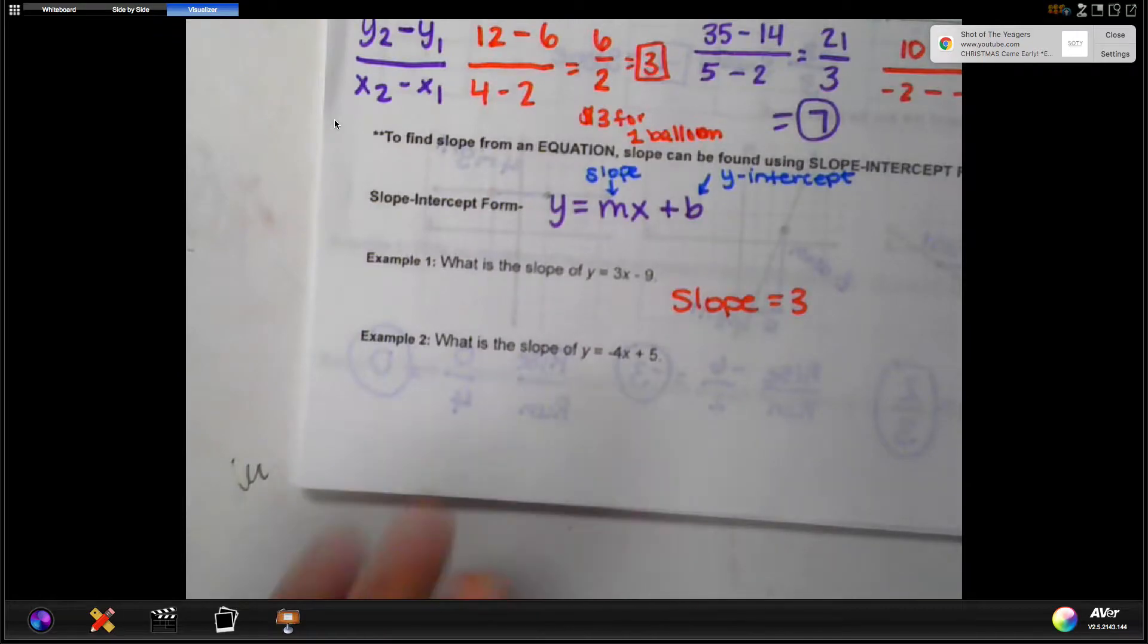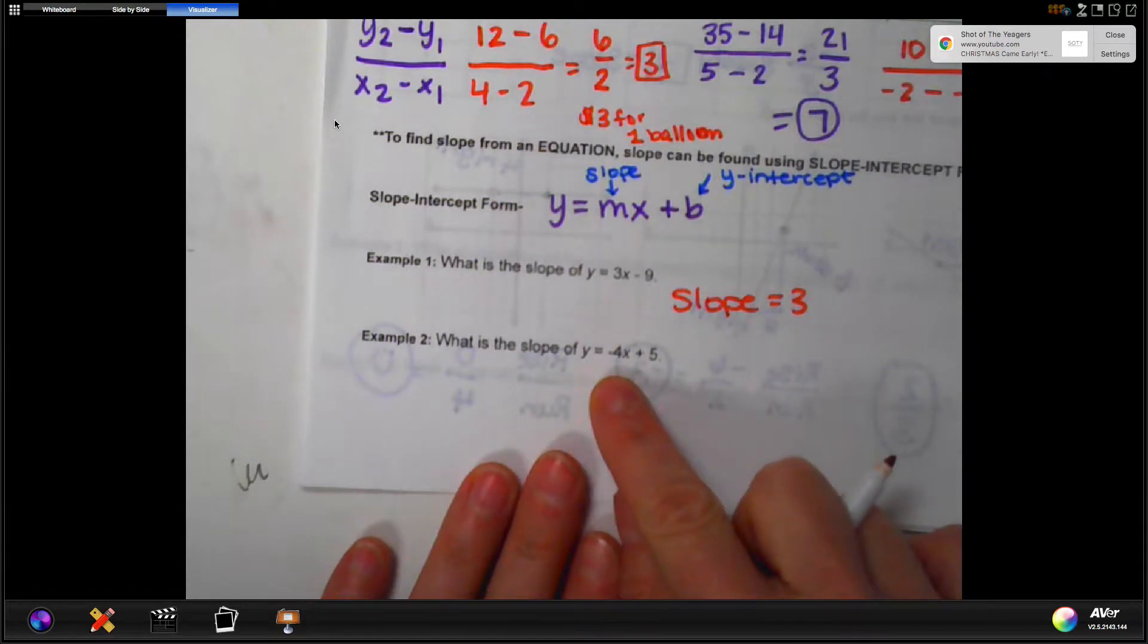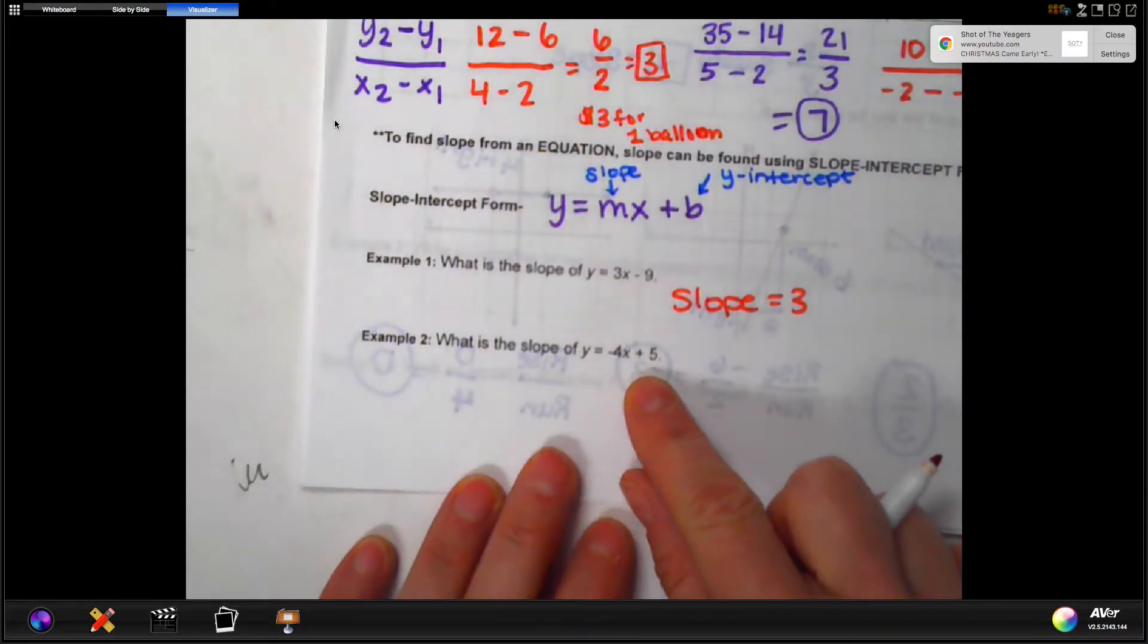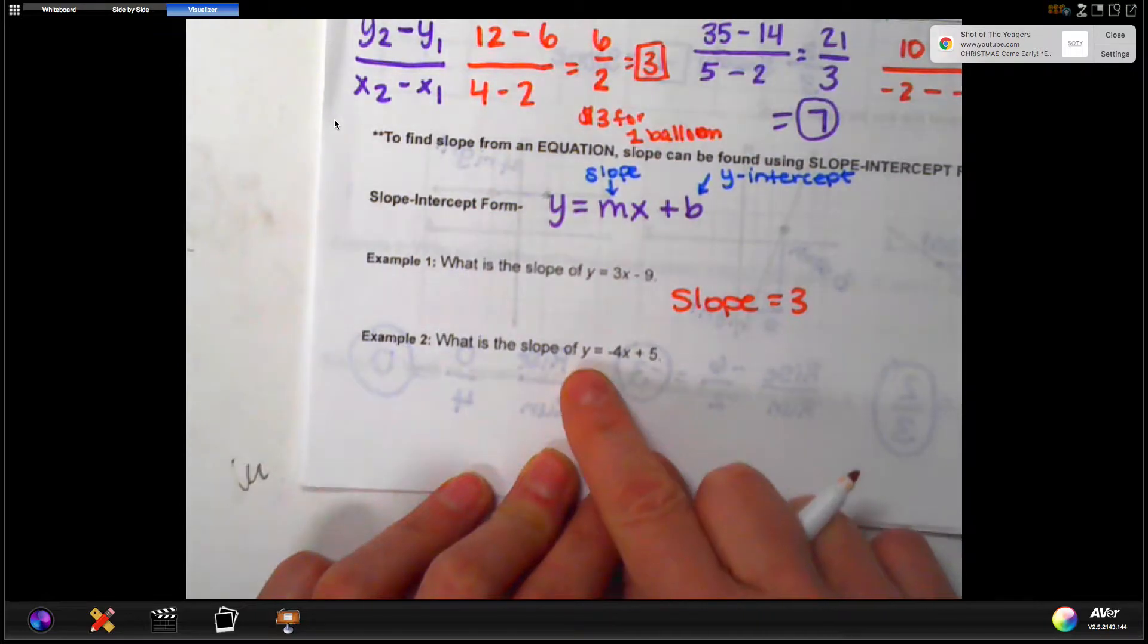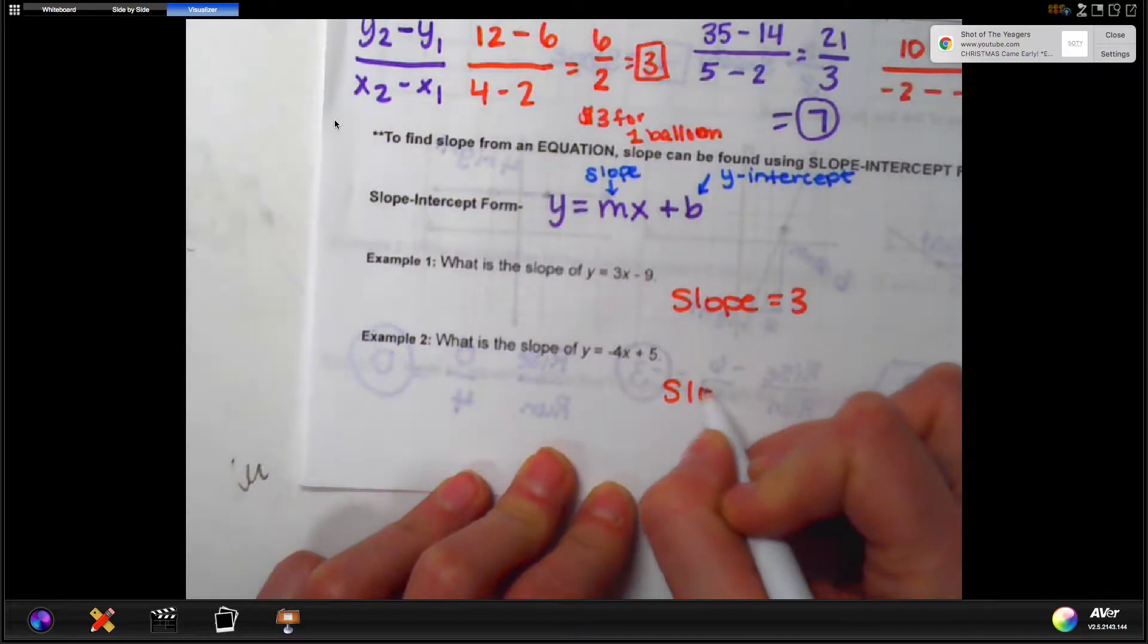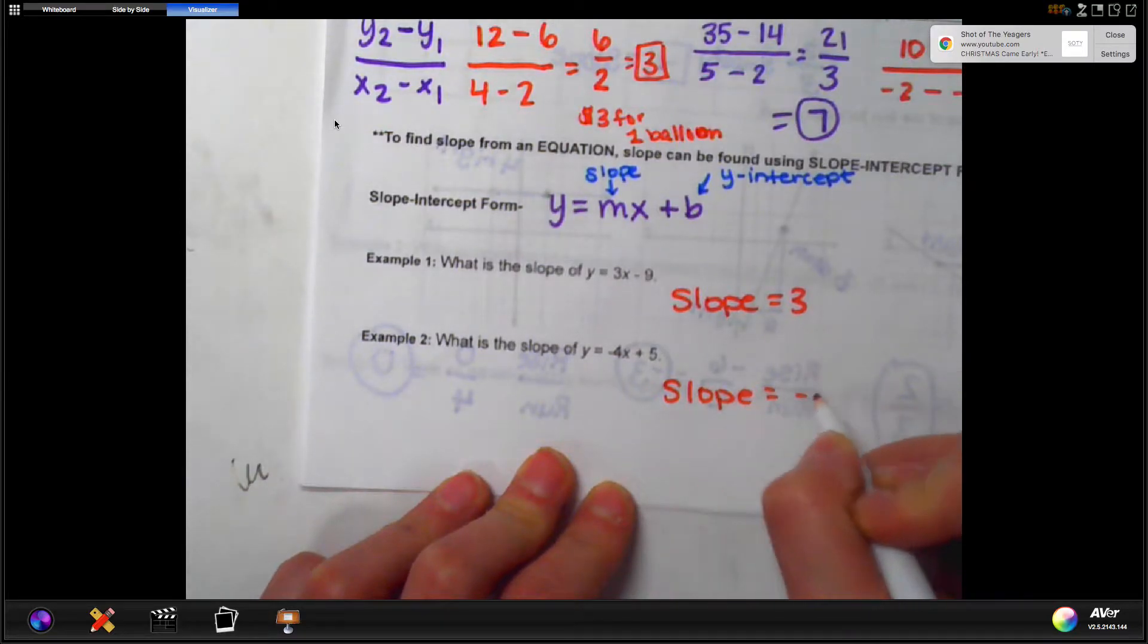How about this one? y equals negative 4x plus 5. Again, you have to check, is the y alone on one side of the equal sign? It sure is. So then our negative 4 is next to x, so the slope is equal to negative 4.